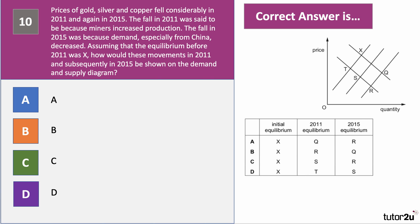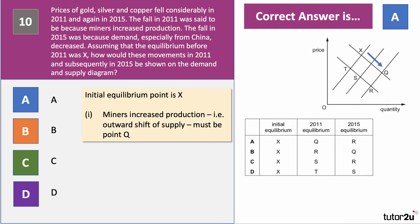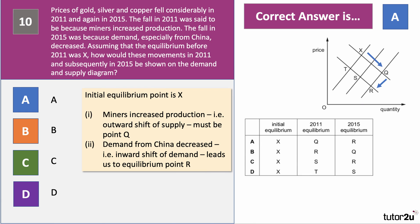The right answer is A. The initial equilibrium is X. Miners increased production, suggesting an increase in supply — so that's point Q, shifting down the supply curve from X to Q. In 2015, demand from China decreased, so we're looking for an inward shift of demand, which suggests a movement from Q to R. The answer is A.